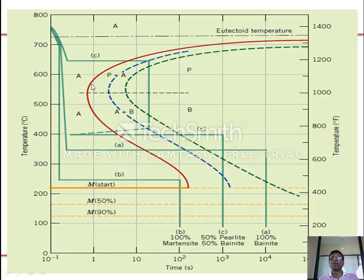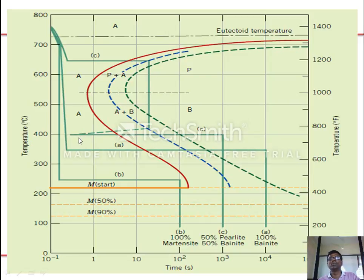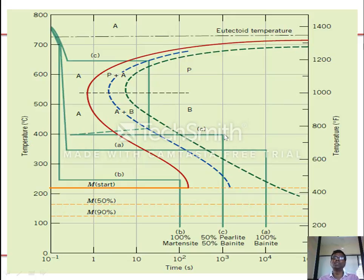For case A, rapidly cooling to 350°C and holding gives 100% bainite. For case B, rapidly cooling to 250°C for 100 seconds gives martensite. For case C, rapidly cooling to 600°C and holding, then cooling again and holding for about 1000 seconds gives 50% pearlite and 50% bainite — the remaining austenite is transformed to bainite by the rapid cooling step.